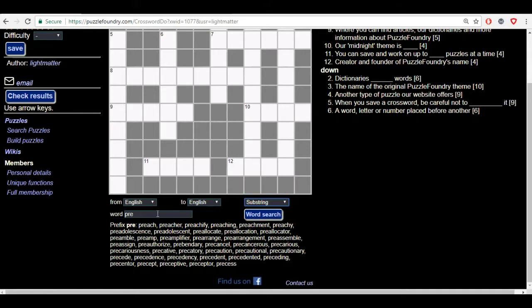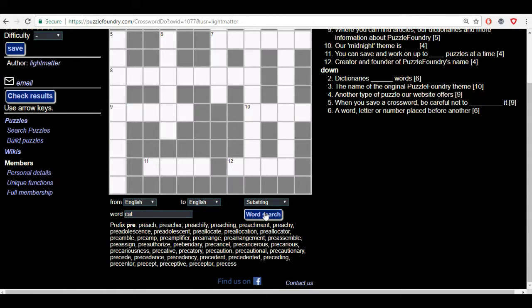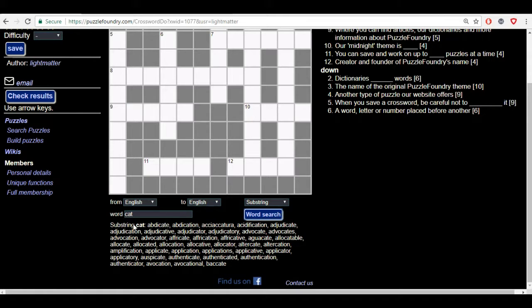Then you have the substring. The substring uses the word that you search for and searches for words that that word is found within. So if you'd use 'cat' you'd see here we have words like abdicate or abdication, acidification, adjudicate. And you can see if you look closely at parts like this you have cat in there, like advocates, there is cat. So it basically gives you the word that you search for within other words that do exist.